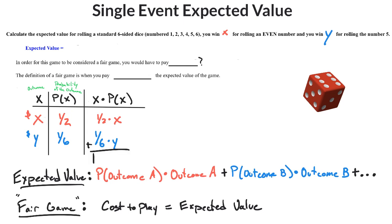When you add all those things together, this value here is the expected value. Whatever you get for that, that's the expected value.